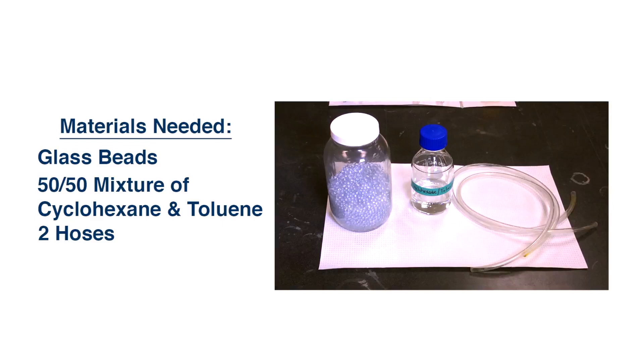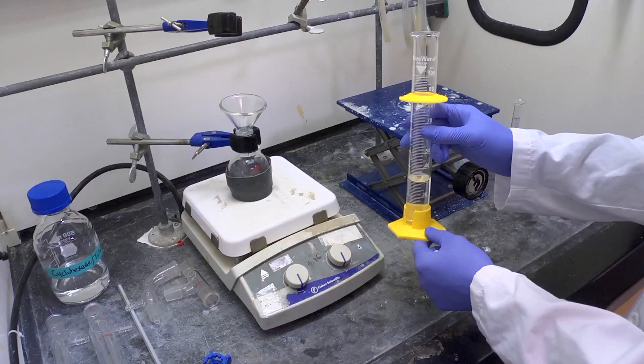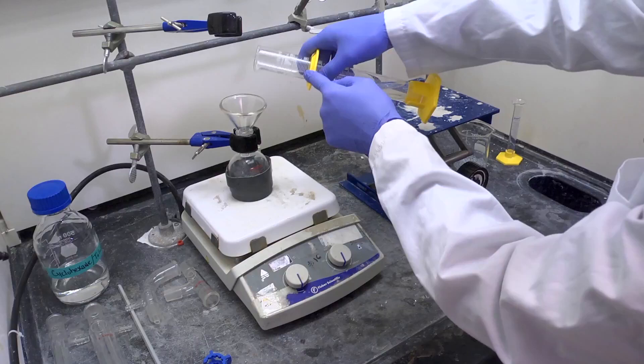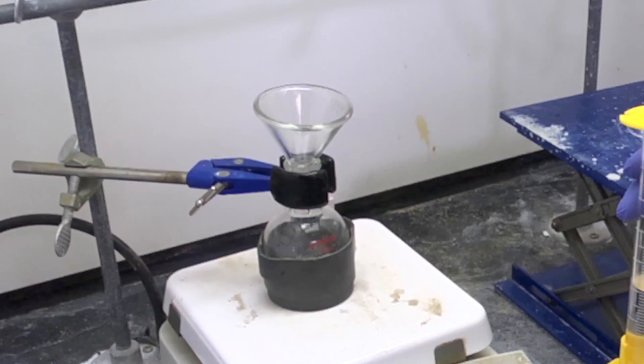You will also need glass beads, a 50-50 mixture of cyclohexane and toluene, and two hoses. Begin by adding 30 milliliters of your 50-50 mixture of cyclohexane and toluene to your 100 milliliter round bottom flask. Add a stir bar. This is known as your distilling flask.